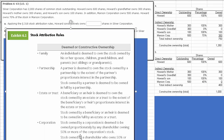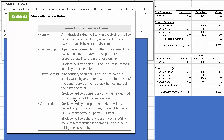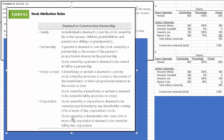Right there is our rule that guides us here. Stock owned by a shareholder who owns 50% or more of a corporation is deemed to be owned in full. So, less than 50%, we do not treat it as ownership.